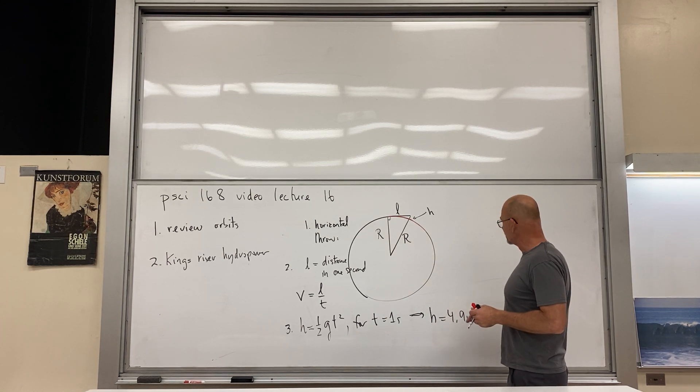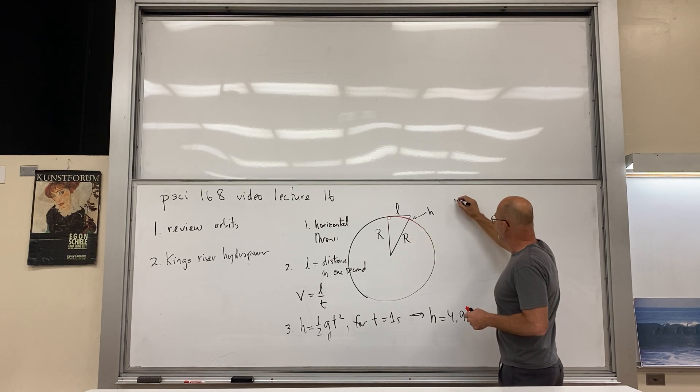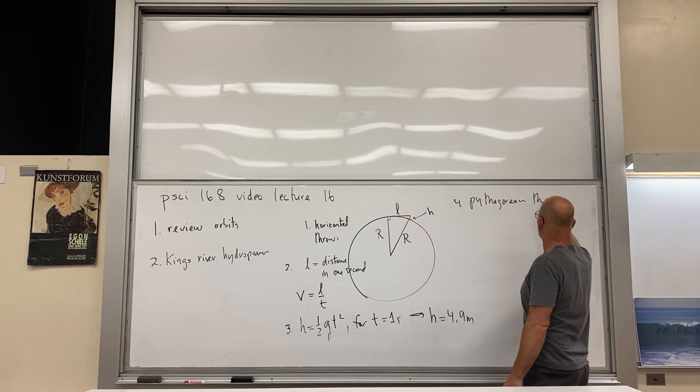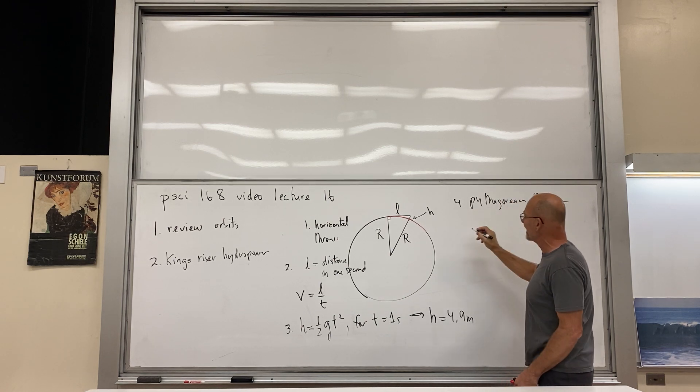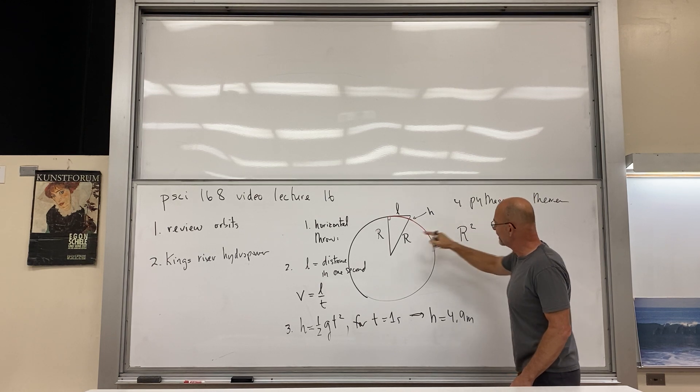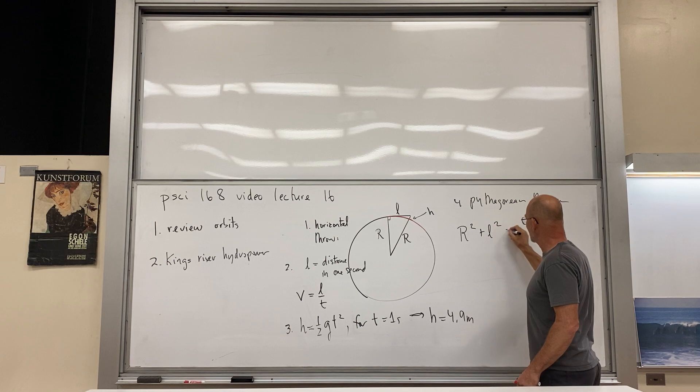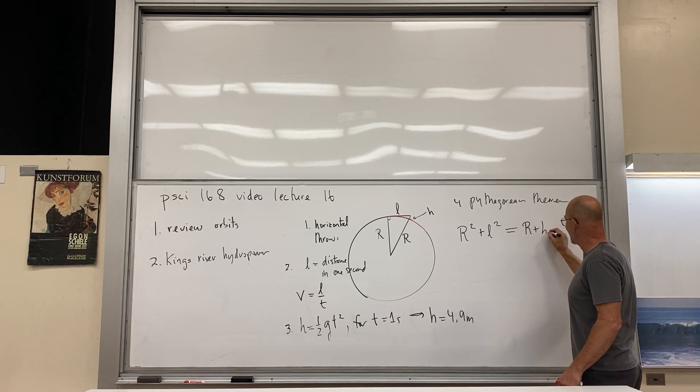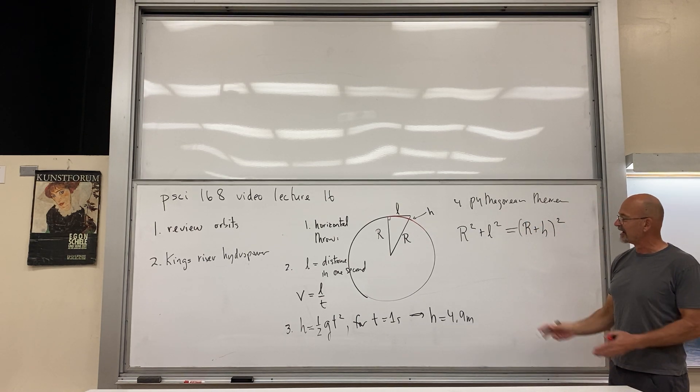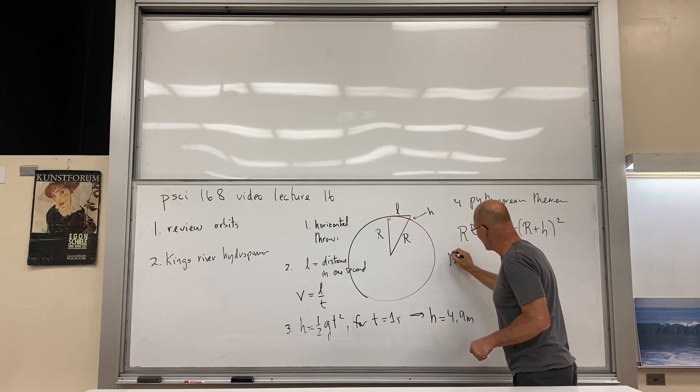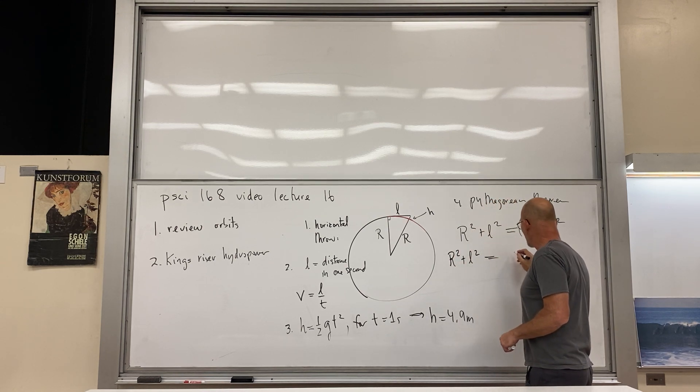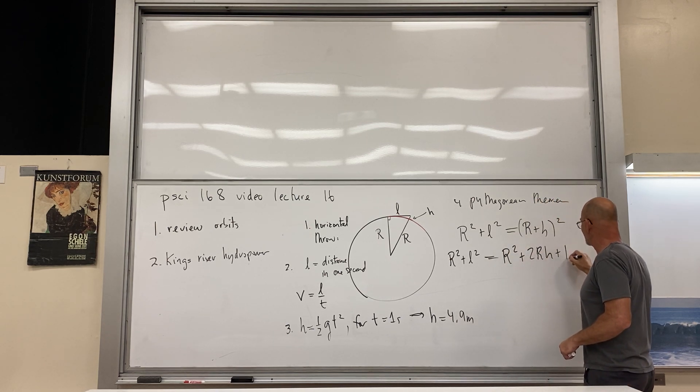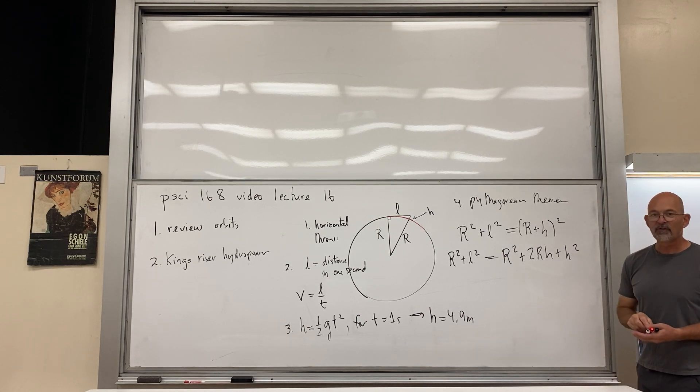And we'll put its number down in a minute. So what we now do is use Pythagoras, Pythagorean theorem, and we just write it out. So that would be r squared here plus l squared equals the hypotenuse squared, and the hypotenuse is r plus h quantity squared. And now we have to expand these out. The left side stays the same.